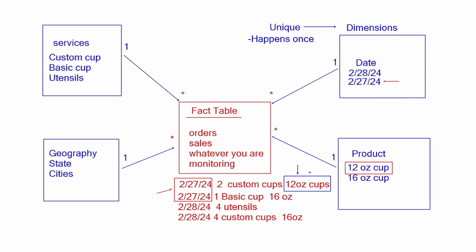You're going to build these relationships based on a key — we talked about key columns when we talked about merging tables together. With this idea, we're going to be able to filter down our data based on specific items. If I choose custom cup in services, it would filter down to where we see custom cups. That's what a star schema is — setting up dimension tables on the one side and your fact table on the many side of the relationship. This allows for filtering inside of your Power BI report. When thinking about a dimension table, it needs to be a unique list of data with no duplicates in order to set up this model correctly.